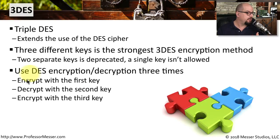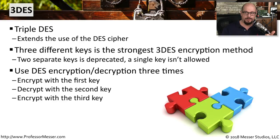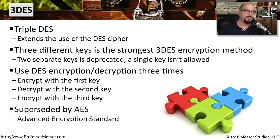The first pass encrypts with the first key. The second pass decrypts the results of that with the second key. And the third pass performs an encryption with the third key. We no longer use Triple DES either. You'll find that the Advanced Encryption Standard, or AES, is the workhorse of encryption commonly used today.